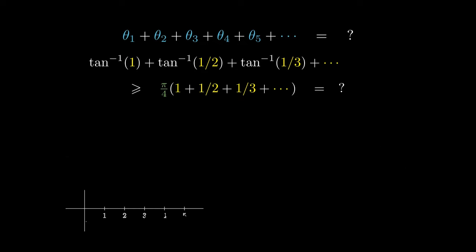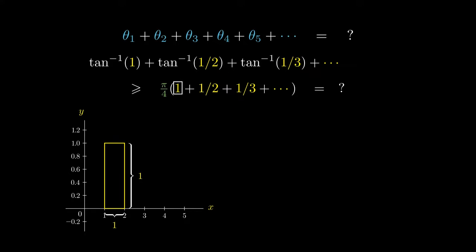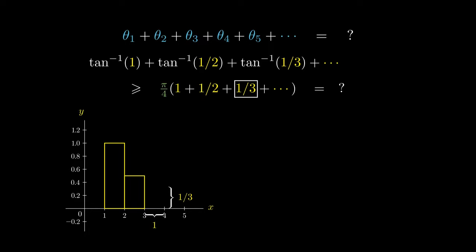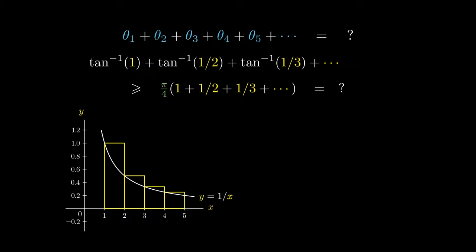We're going to switch gears and draw a different graph. In this graph, we consider the terms 1, a half, one third, and so on and so forth. The term 1 can be thought of as representing the area of a rectangle with base 1 and height 1. Similarly, the term a half represents a rectangle with base 1 and height a half. Likewise with a third, a fourth, and so on. On the other hand, we can consider the graph of y equals 1 over x and the area under this graph. This picture tells us that if we take 1 plus a half plus a third, so on and so forth, we obtain the area of the rectangles, which is not less than the area under the graph represented by this integral.